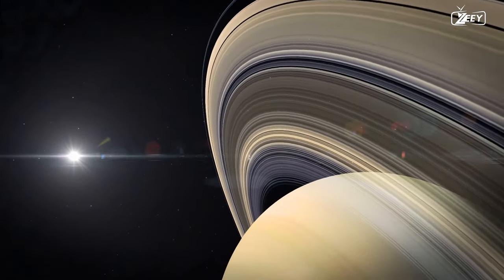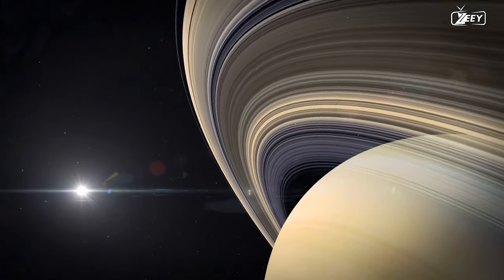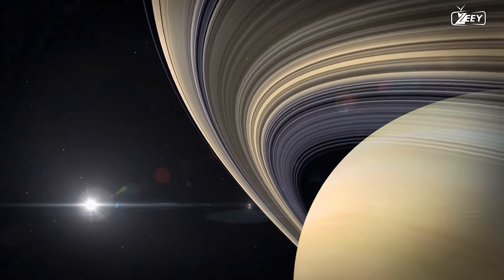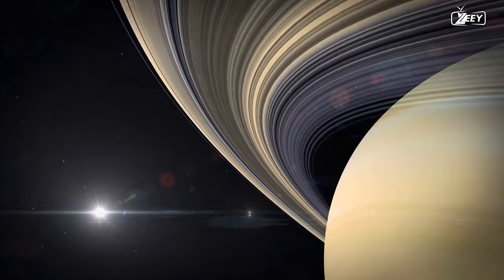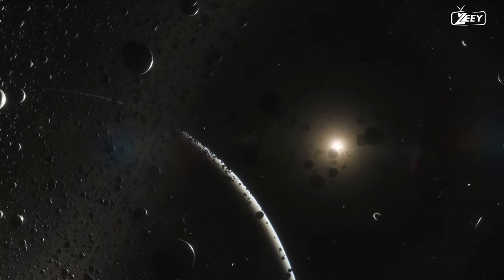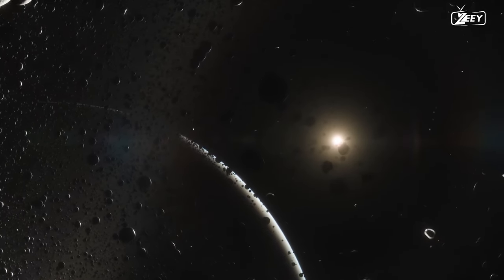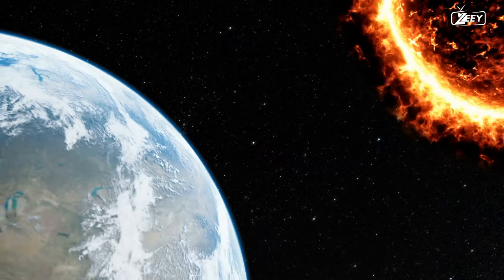If they were at the same distance as Earth, they would have evaporated completely by now due to their ice composition. This means that if the Earth had an asteroid ring similar to Saturn's, it would evaporate rapidly due to its proximity to the sun, thereby diminishing the pleasure of having rings.